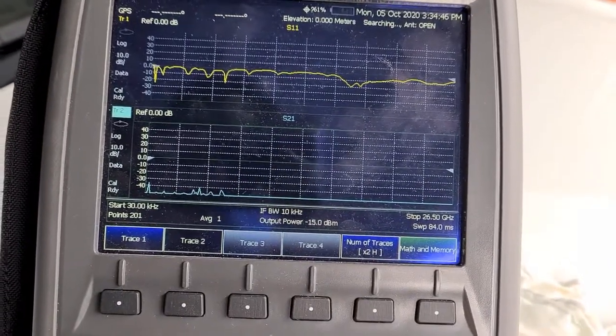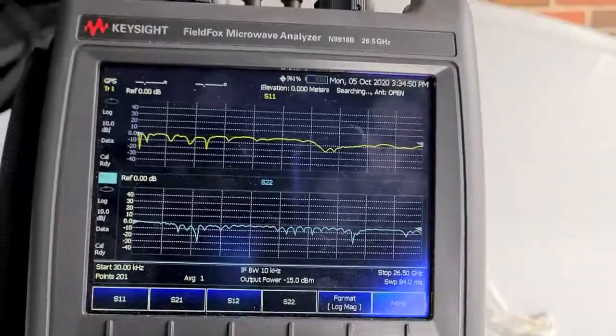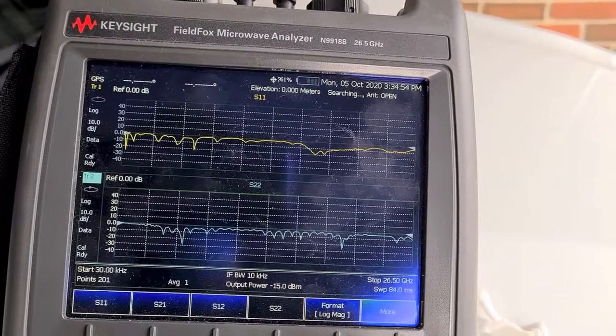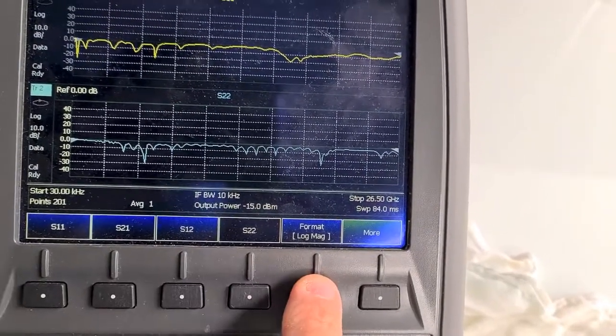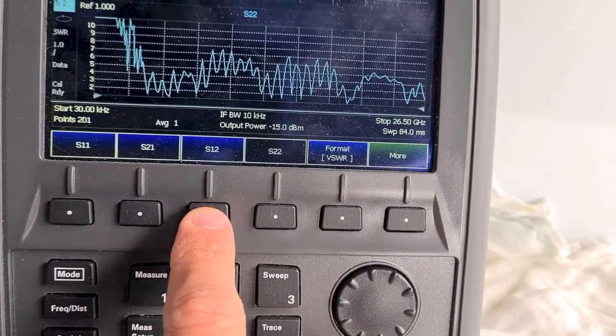With that trace 2, then we go to measure, and then we select S22. This doesn't look much like the VSWR that we know, so we can actually go to format. It's still under measure, format, go to VSWR.